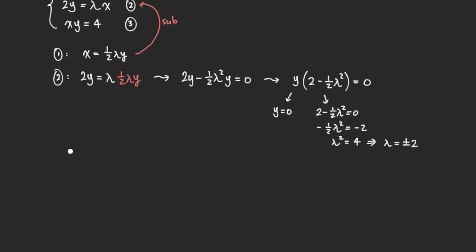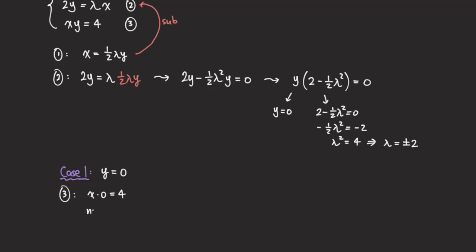Case 1: y = 0. When y = 0, we plug it into the constraint equation: x·0 = 4. But that's impossible because zero times anything is zero. So there is no solution in this case, and we move on.